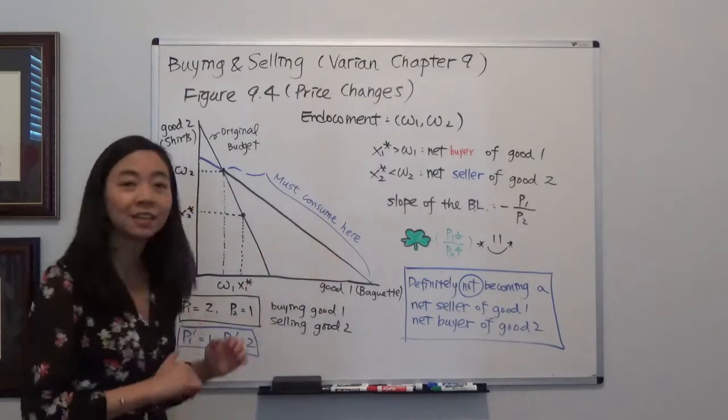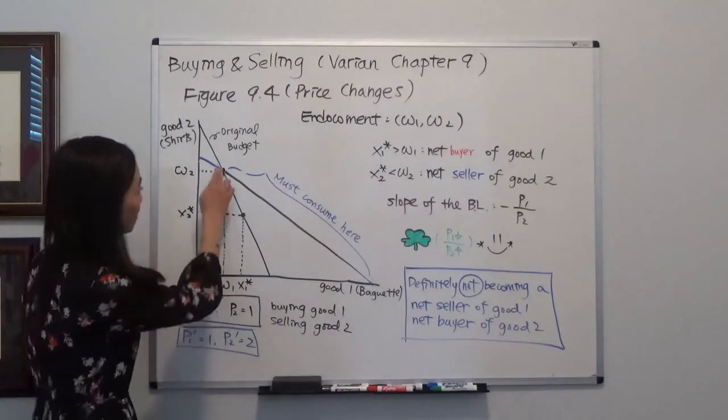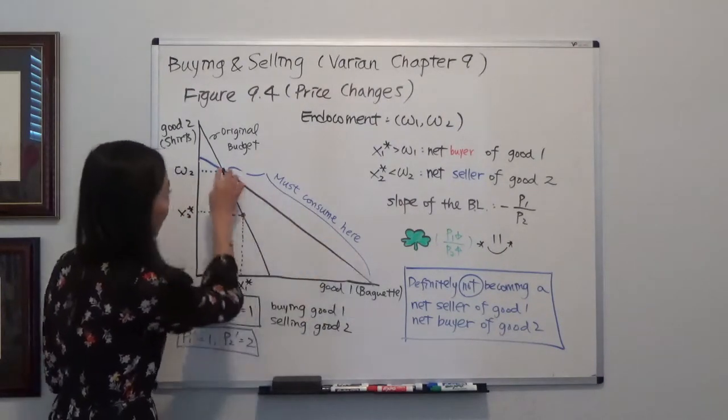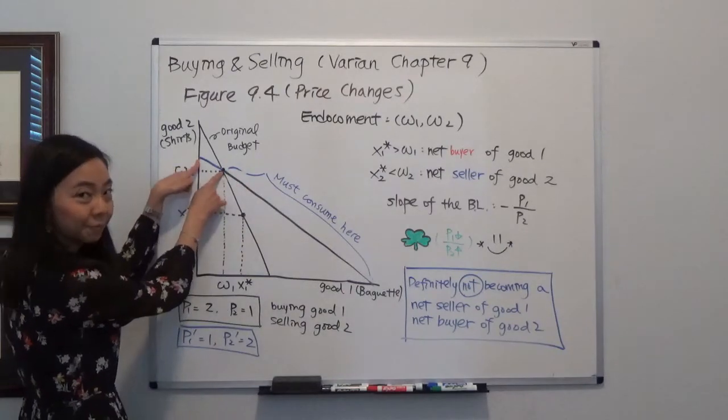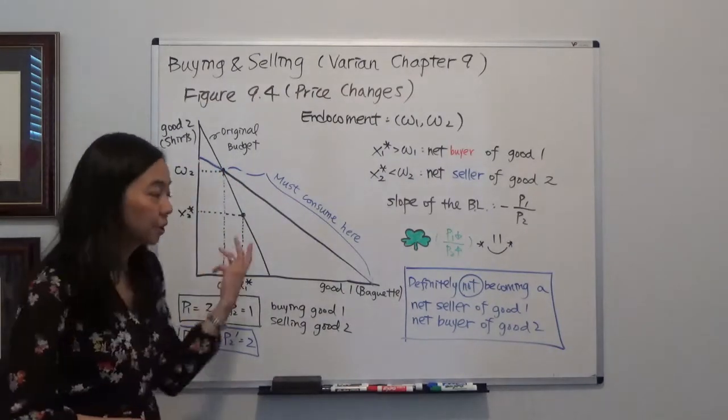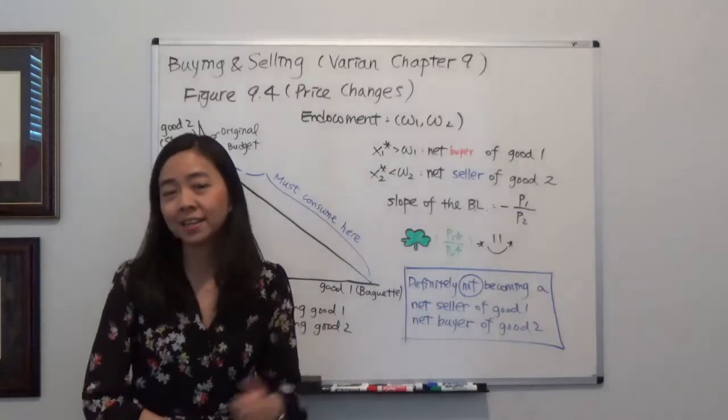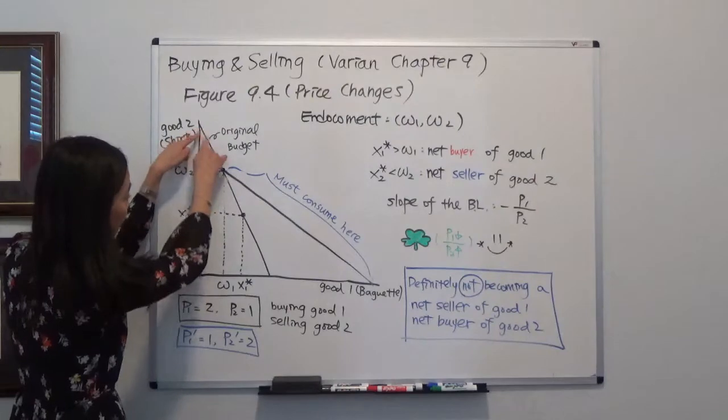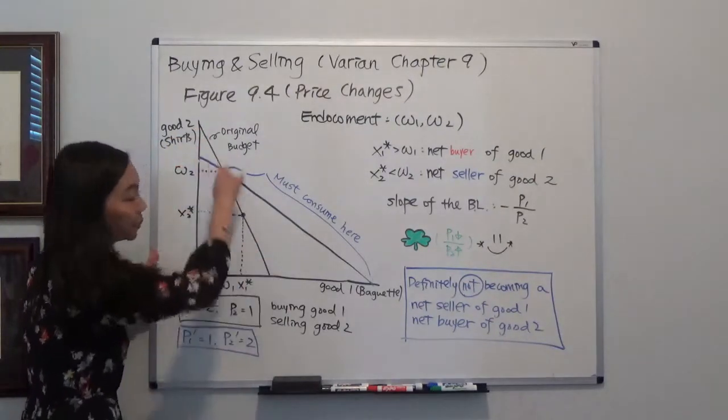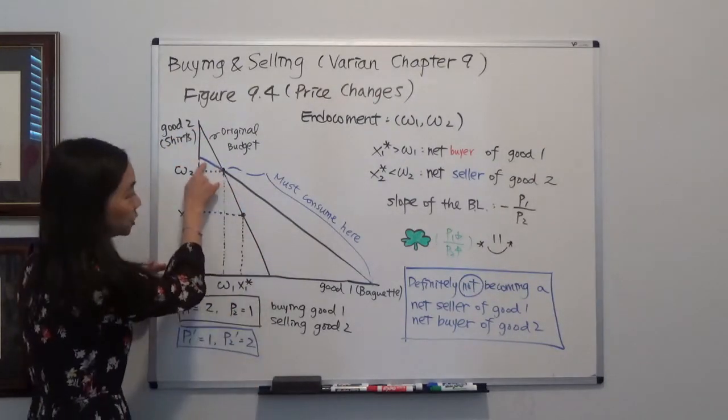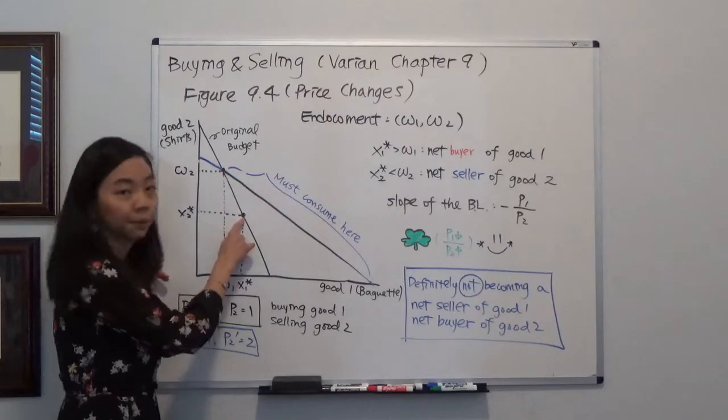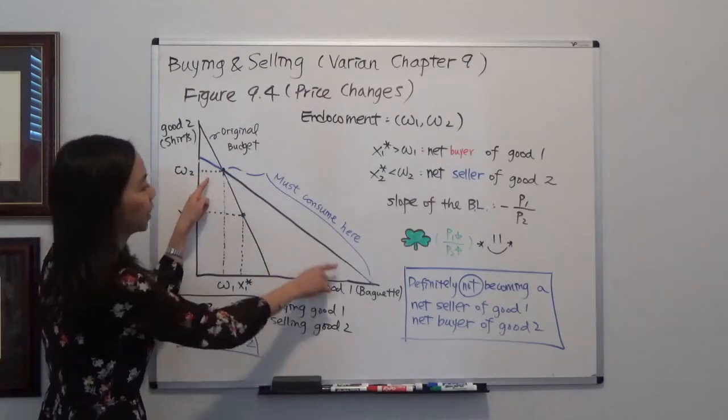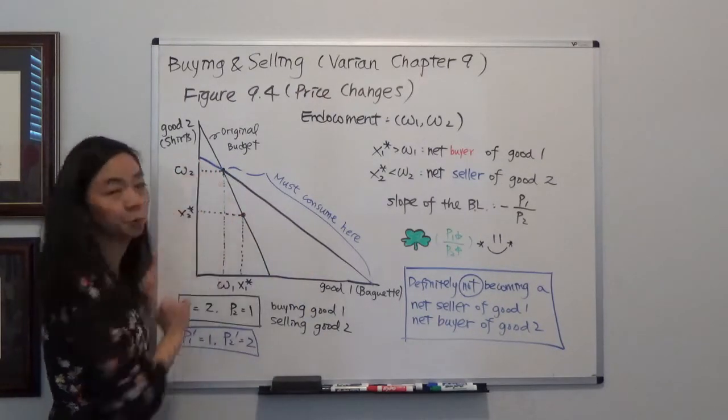And now the textbook tells you that your final consumption must be here. It cannot be in this area. Why not? There are two ways to explain that. One is the weak axiom of revealed preference. So you see, this part of the new budget line is under your original old budget line. And did you choose that part? No. You chose this part. So now after the price changes, there's no way for you to go back there.